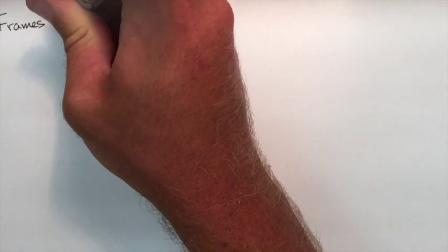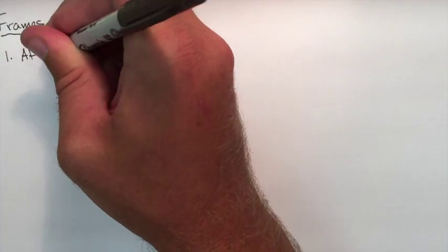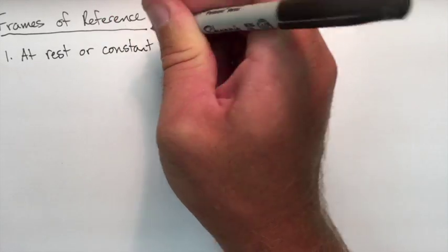A frame of reference. This is something we have to nail down before we start. A frame of reference is just an origin from which to view motion. If we have an inertial frame of reference, that's something that's at rest or constant velocity, which means all the laws of physics hold true.